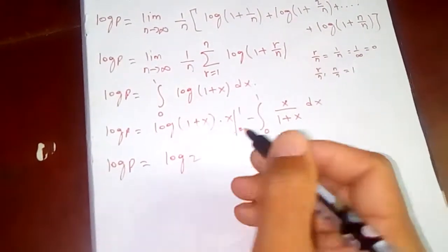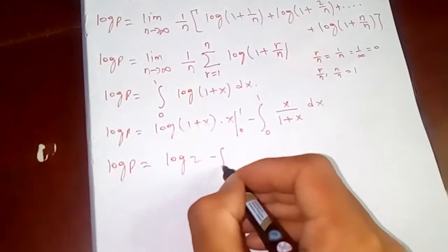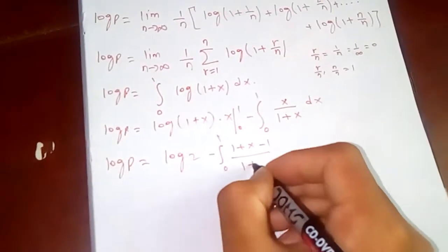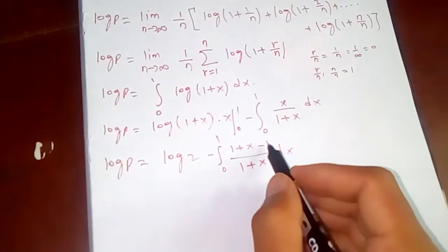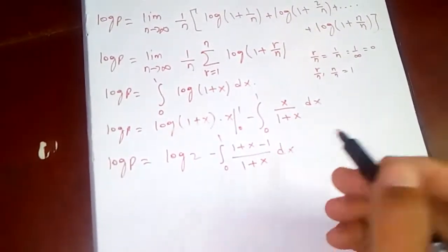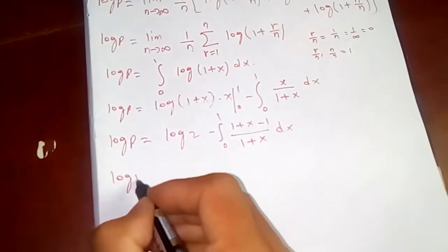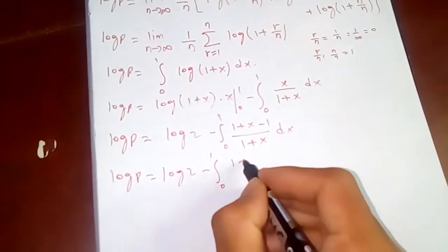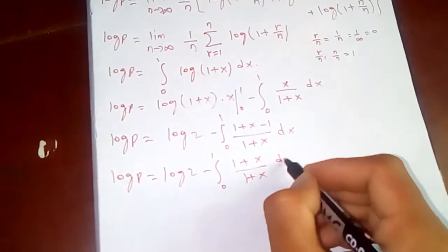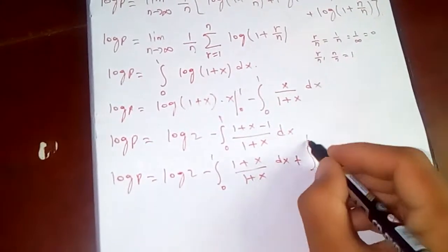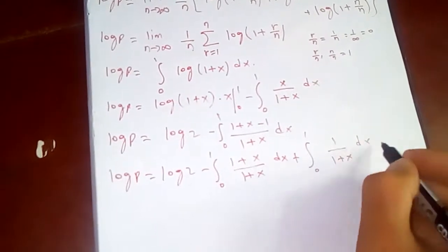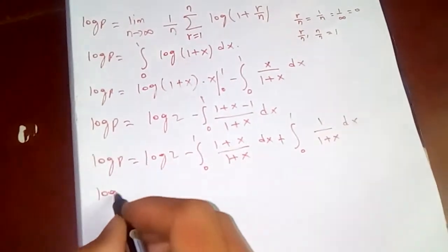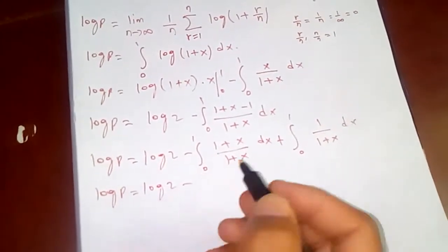This gives log two minus the integral from zero to one. Now I want to rearrange: write x as one plus x minus one, so x over one plus x becomes one plus x minus one all over one plus x. Separating gives the integral of one dx minus the integral of one over one plus x dx, from zero to one.